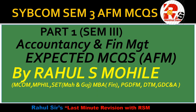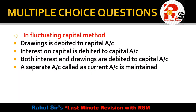Question 1 is from the chapter of final accounts. In final accounts, we have two important methods: the fixed capital method and the fluctuating capital method. In the fluctuating capital method, no separate current account is created — interest on capital is debited to the capital account, and both interest and drawings are debited to the capital account directly.